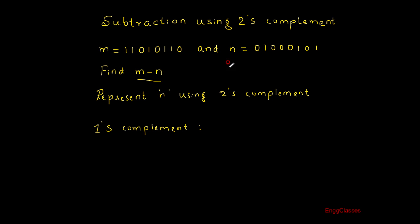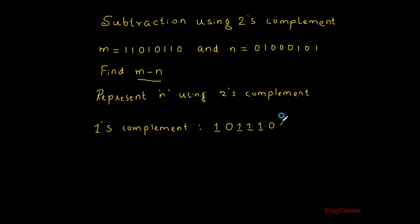So I am representing n using one's complement. The first digit is 0, so I represent it with 1. Then I have 1, represented with 0. Then I have three zeros, represented with three ones. Then I have 1, represented with 0. Then I have 0, represented with 1. And lastly I have 1, represented with 0. So this is the one's complement of n.